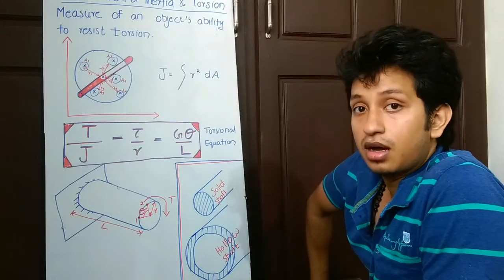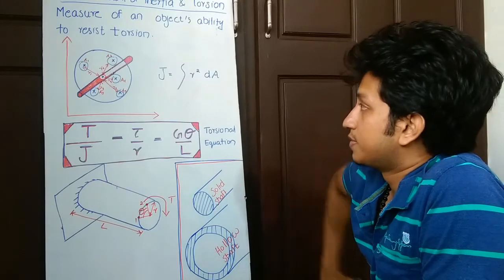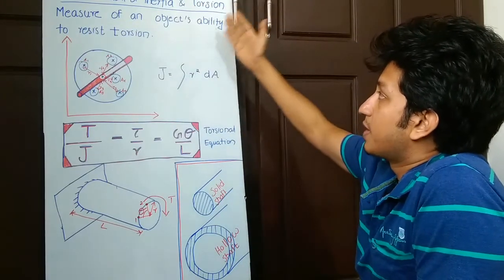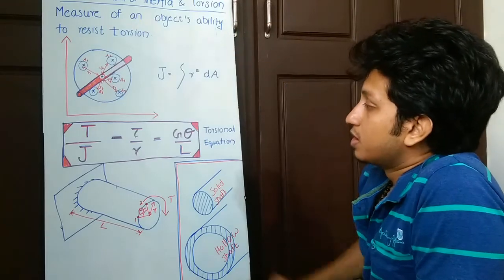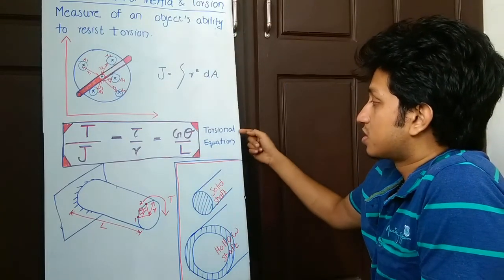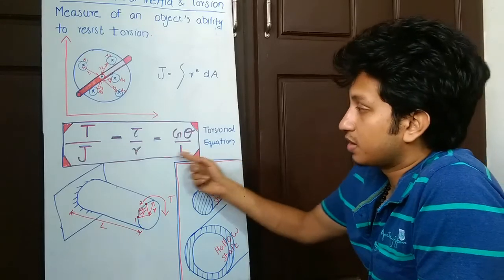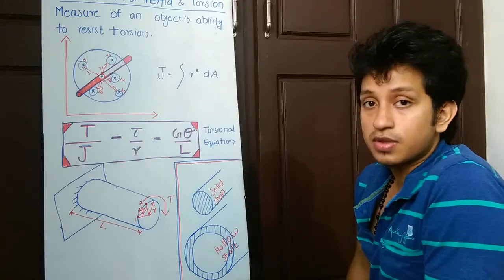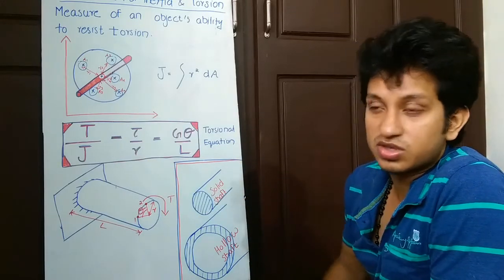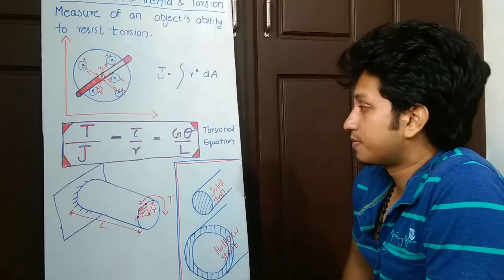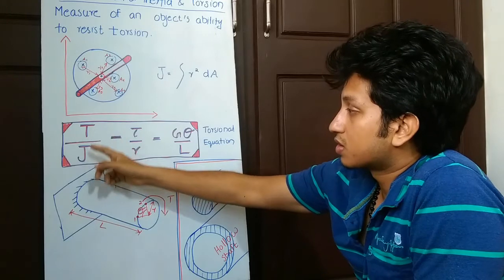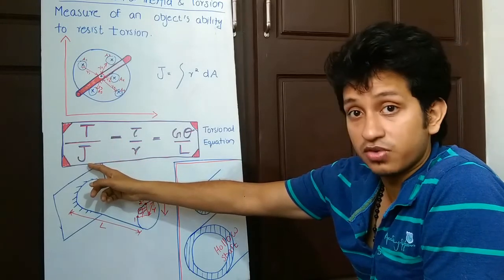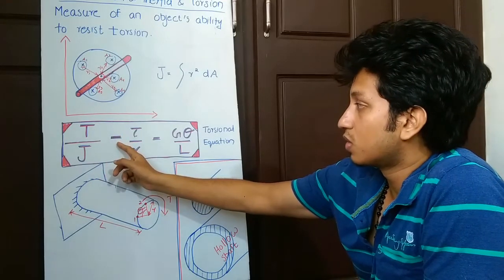Let's see how it affects torsion. It's a measure of an object's ability to resist torsion. This is the torsional equation, a very fundamental equation used to solve problems related to shafts, keys, and power.